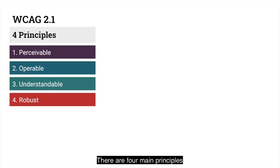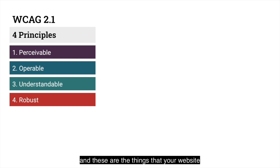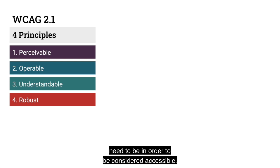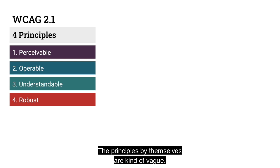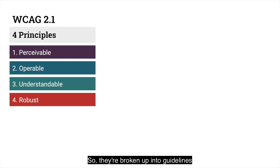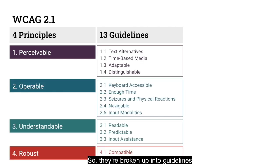There are four main principles when it comes to WCAG. These are the concepts — the things that your website needs to be in order to be considered accessible. It needs to be perceivable, it needs to be operable, it needs to be understandable, and it needs to be robust. The principles by themselves are kind of vague, so they're broken up into guidelines, and there are 13 guidelines total.